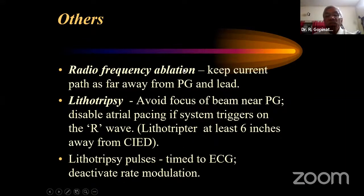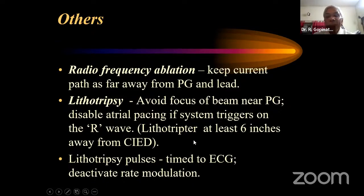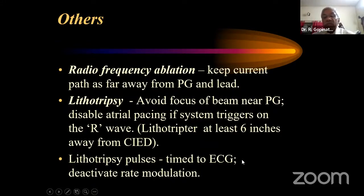For radiofrequency ablation procedures — for warts, trigeminal neuralgia, etc. — keep the current path as far away from the pulse generator and lead as possible. For lithotripsy, avoid focusing the beam near the pulse generator, keep the lithotripsy device at least six inches away, time the pulse to the ECG, and disable all anti-tachycardia and rate modulation functions. For electroconvulsive therapy, there are no permanent EMI effects, but post-ECT seizure activity may cause prolonged oversensing; reprogram to asynchronous mode in pacemaker-dependent patients and disable the defibrillator function to prevent inappropriate shocks.